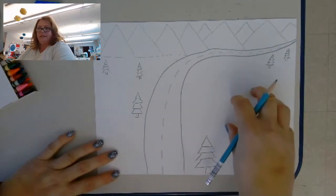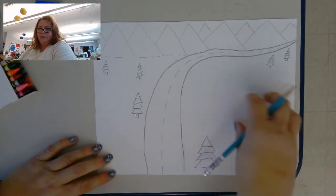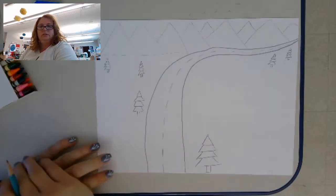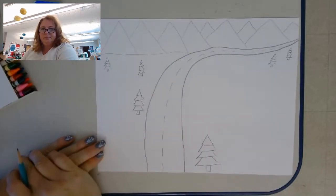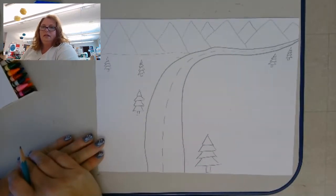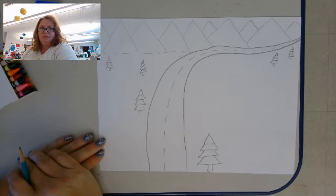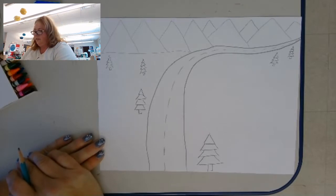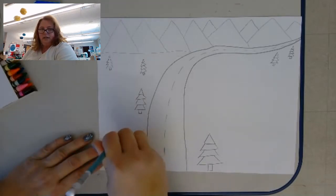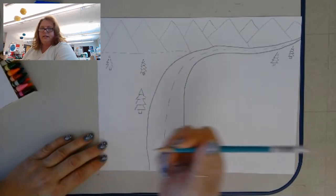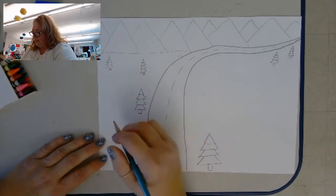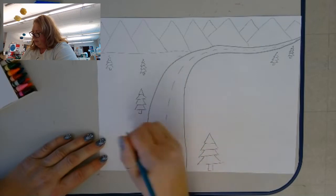So now we want to leave some space. I should have told you that. I'll leave some space here for a house. Next I'm going to draw a snowman here but he's looking that direction, so it's a side view of a snowman.